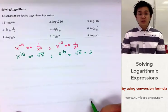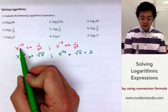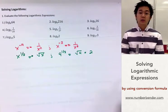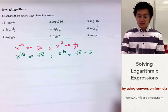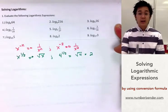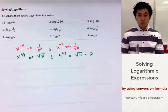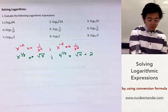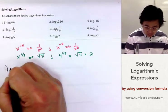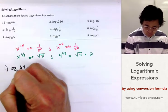This concept of the law of exponents for negative exponents and fractional exponents is what you're going to see in some of the expressions we're going to be solving in problems 1 through 9. So let's start with problem number 1: logarithm of 64, base 4.